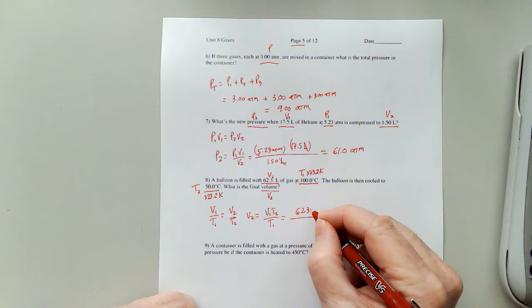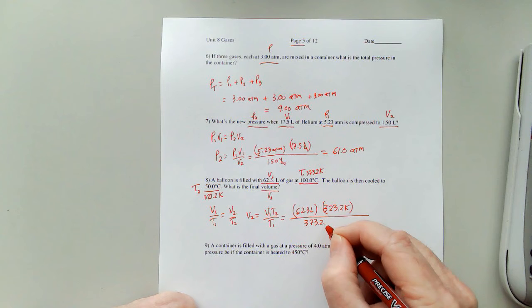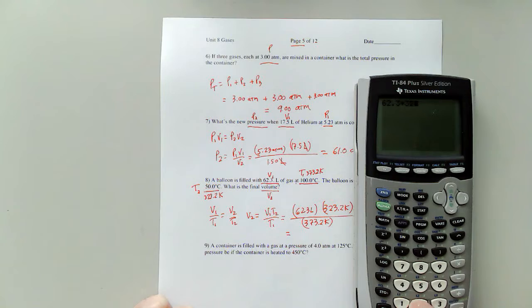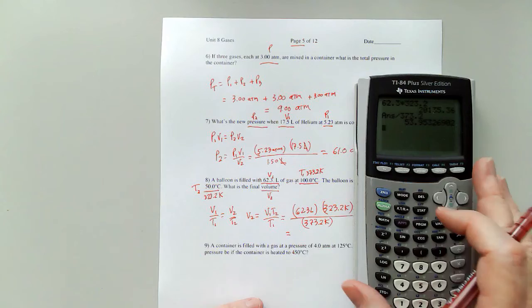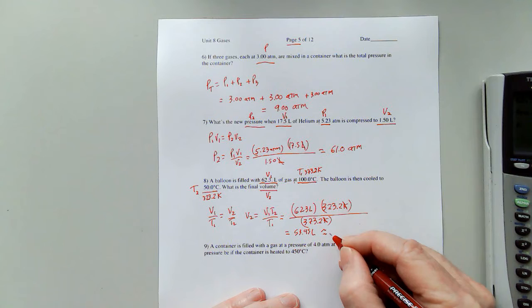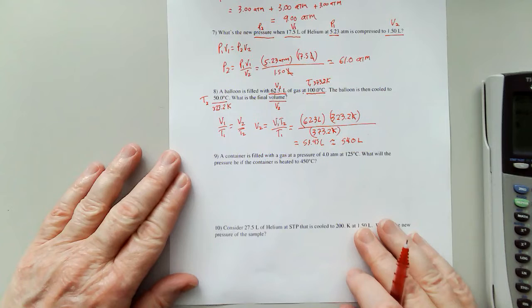So 62.3 liters times the 323.2 Kelvin divided by the 373.2 Kelvin. So 62.3 times 323.2 equals, divide by 373.2 equals, 53.95. I'm looking at three sig figs, so 53.95 liters is going to round off to be approximately 54.0 liters.